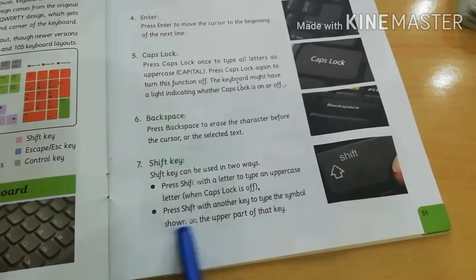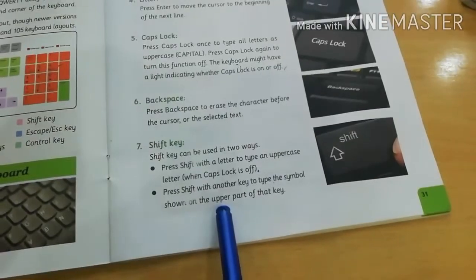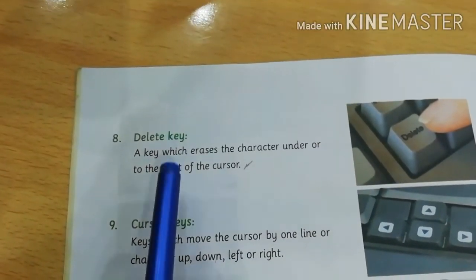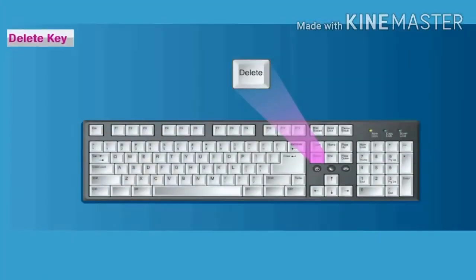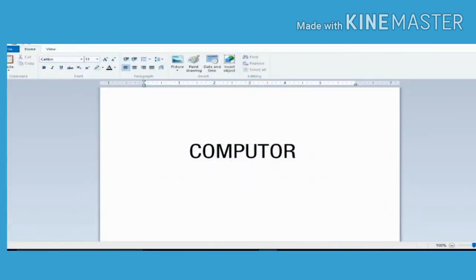Next is delete key. Dear students, pressing this key erases any typed text on the right side of the cursor. For example, if you type C-O-M-P-U-T-O-R instead of C-O-M-P-U-T-E-R, you need to correct the spelling.